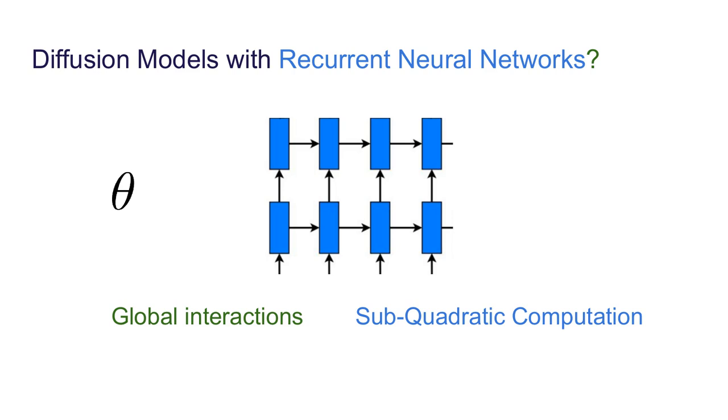Can you run diffusion models with other forms of global interactions? In particular, we were interested in trying out diffusion models with a form of a recurrent neural network. This would give us the same form of global interactions we had with attention, but would potentially give us sub-quadratic computation in the length of the image. Here I use length to represent the linearized form of the image, like when we pass it into a transformer.